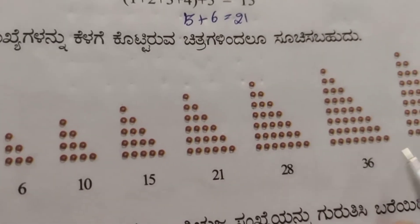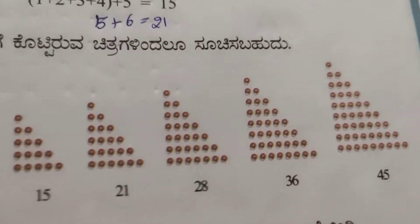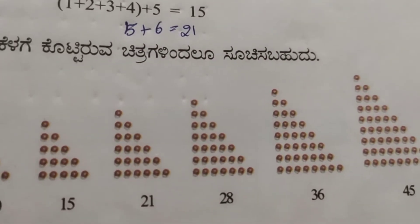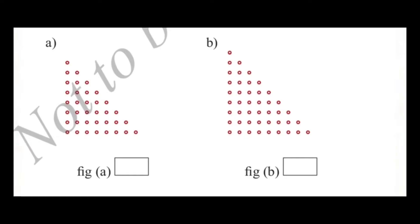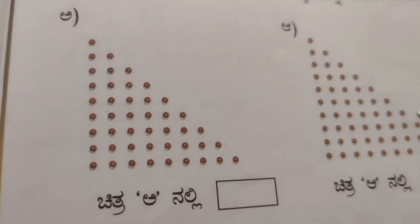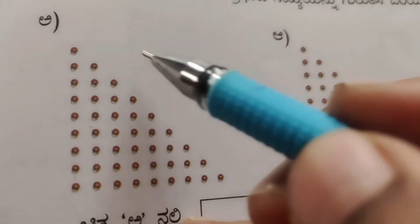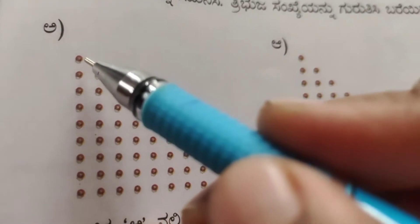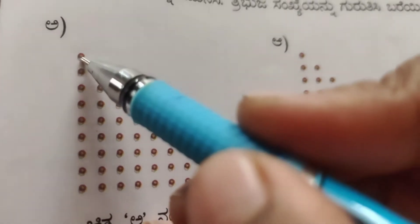Triangular numbers: 28, 36, 45 — and so on. Next activity: observe the given figures and write the triangular numbers. Count the dots just as we counted for square numbers.